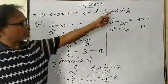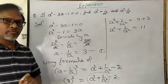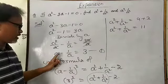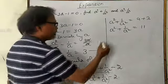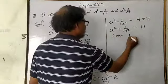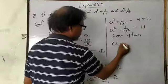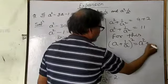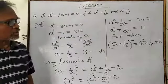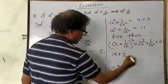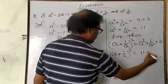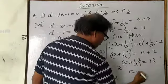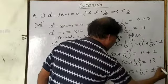But if you want to find a squared minus 1 by a squared, there is a formula: a plus 1 upon a into a minus 1 upon a. You know a minus 1 upon a, but for a plus 1 upon a, you will use the formula for a plus 1 upon a whole square and put the value of a squared plus 1 upon a squared. So you get a plus 1 upon a whole square equals 11 plus 2 equals 13, so a plus 1 upon a is equal to plus or minus under root 13.